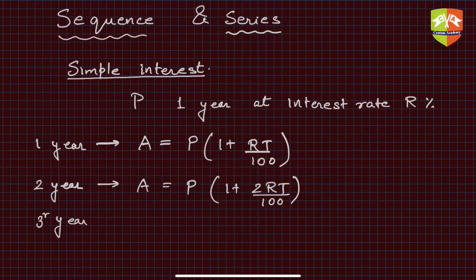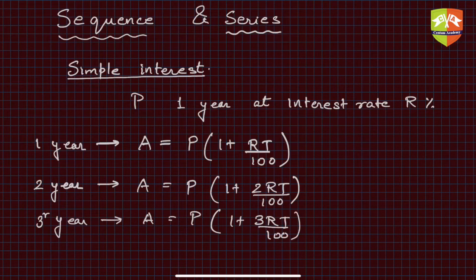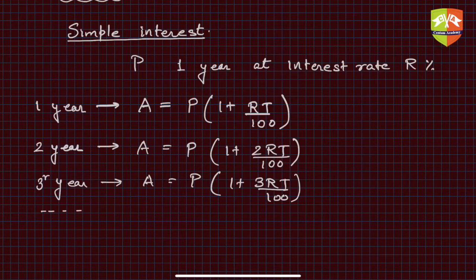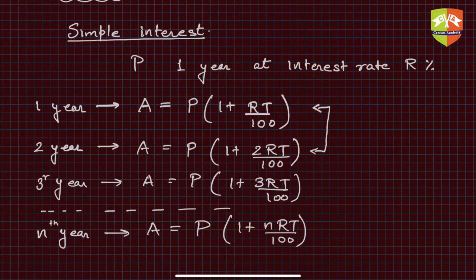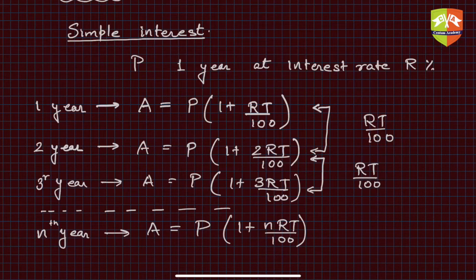After the third year, he will pay P times (1 + 3RT/100). Now if you see this, there is a pattern emerging. After n years, if we generalize, he will have to pay P times (1 + nRT/100). Looking at these amounts, the second-year amount is more than the first-year amount by RT/100, and between any two consecutive years the difference is also RT/100.